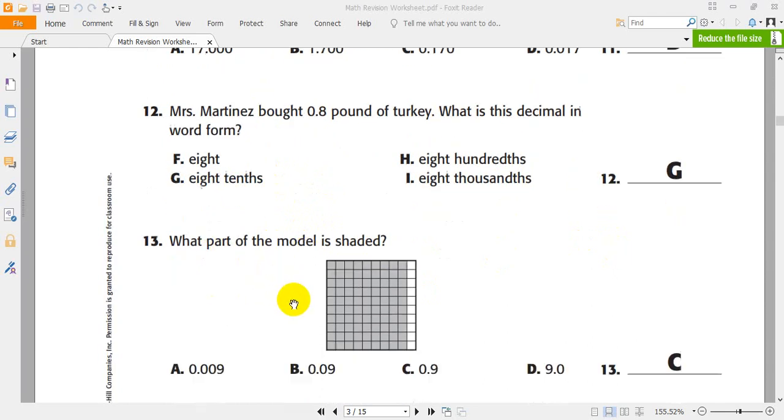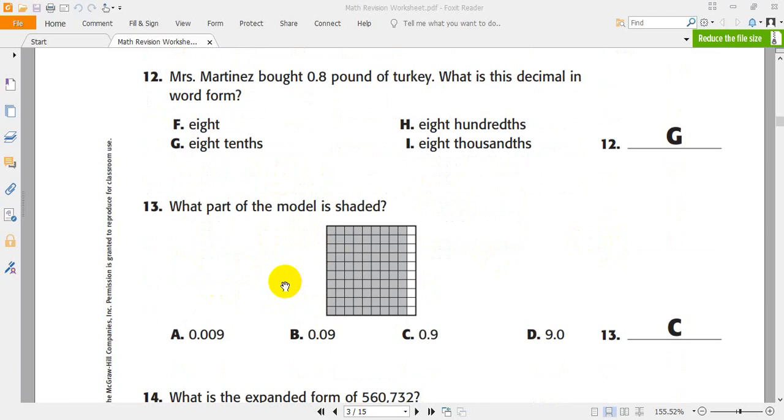What part of the model is shaded? These are 100. So, they shaded 90 pieces or 90 squares, 90 small squares. So, 90 out of 100, it means 90 over 100. It means 0.90. 0.90 could be written as 0.9. We get rid of this 0 on the right. So, C is the right answer.